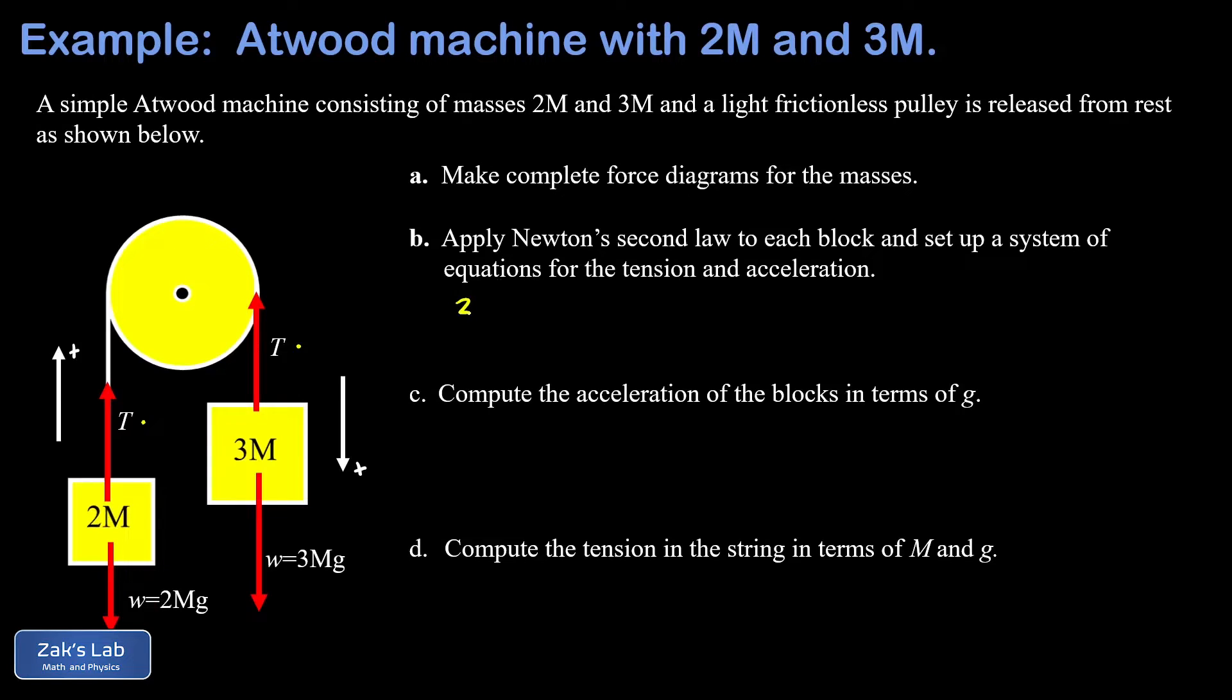So we apply Newton's second law to the mass 2m, and that's just F net equals ma. Now, using the sign convention the way we defined it, T counts as positive, and that 2mg counts as negative. It's pointing in the negative direction. So there's my net force, and that's equal to the mass that we're talking about, that's 2m, times its acceleration.